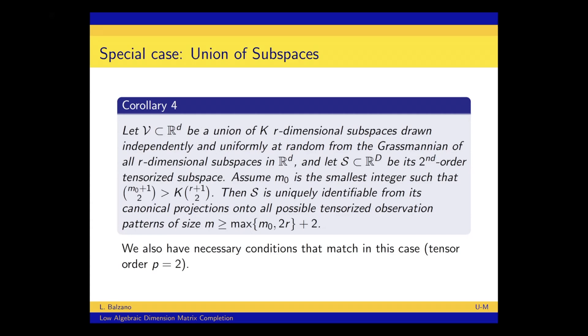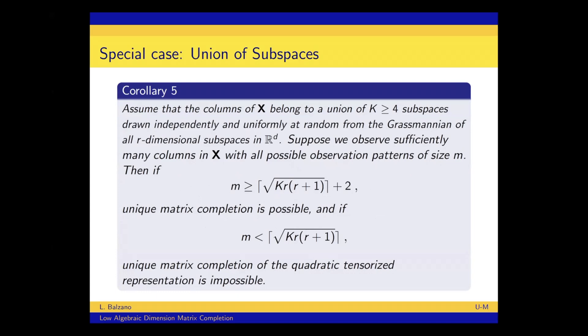We have a union of K R dimensional subspaces drawn uniformly and independently from the Grassmannian, so they're in general position. And we're going to take it second order tensorized subspace, so I'm using a lifting like I've showed so far to quadratic polynomials. Assume M naught is the smallest integer so that M naught choose 2 is bigger than this rank I'm telling you that we have in the lifted space, K times R choose 2. So M naught is going to be the minimum number we have in the original space. And then of course, when we lift it, we get M naught choose 2 observations in the lifted space. So in that case, then what we can show is there is at least one tensorized observation pattern where the subspace is full rank in this lifted space. And so S is uniquely identifiable from its canonical projections onto the tensorized observation patterns of this size. So this M naught, which maybe is an intuitive idea that it should be how many samples you need in the original space. In fact, it is. And we also have necessary conditions that match that case.